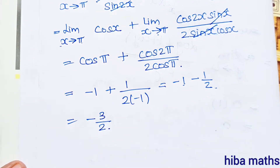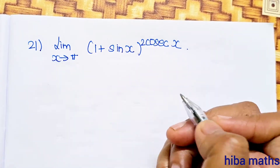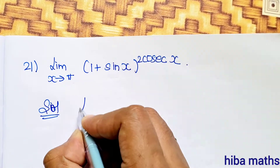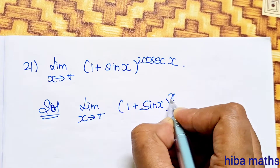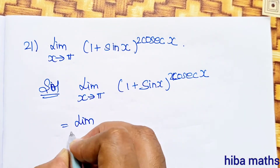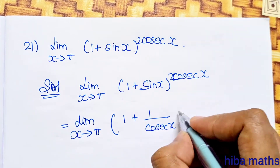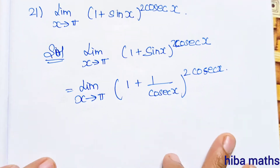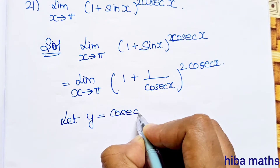The answer is minus 3 by 2. Now the 21st question: limit x turns to pi of (1 + sin x) to the power of 2 cosecant x. Let y be equal to cosecant x.